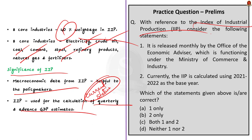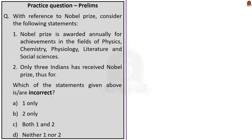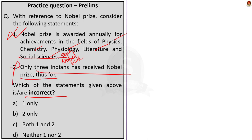Now let us move on to the preliminary practice question discussion. The first question is about Nobel Prize — you have to find the incorrect statement. Statement one says Nobel Prize is awarded annually for achievements in physics, chemistry, physiology, literature and social science. This is incorrect — instead of social sciences, it is awarded for peace. Statement two says only three Indians have received Nobel Prize thus far — this is also incorrect, as more than three Indians have won Nobel Prizes. The correct answer is option C — both statements one and two are incorrect.